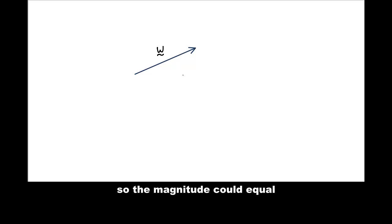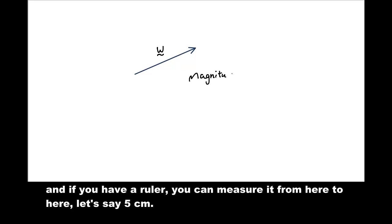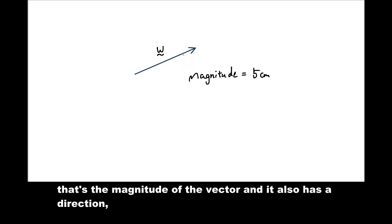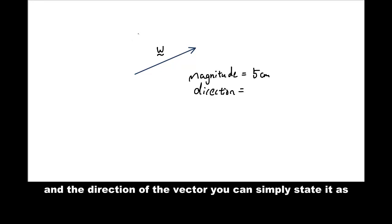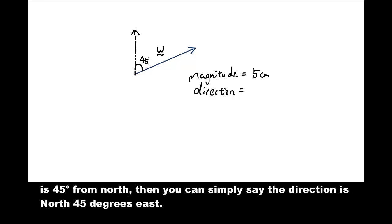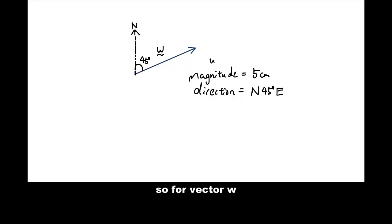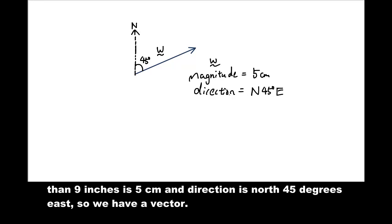The length of the vector. So the magnitude could equal, and if you had a ruler and you measure it from here to here, let's say magnitude is 5 centimeters. That's the magnitude of the vector. And it also has a direction. And the direction of the vector, you can simply state it as an angle from the north. So let's say this angle here is 45 degrees from the north. Then you can just simply say the direction is north 45 degrees east. So for vector w, the magnitude is 5 centimeters and direction is north 45 degrees east. So we have a vector.